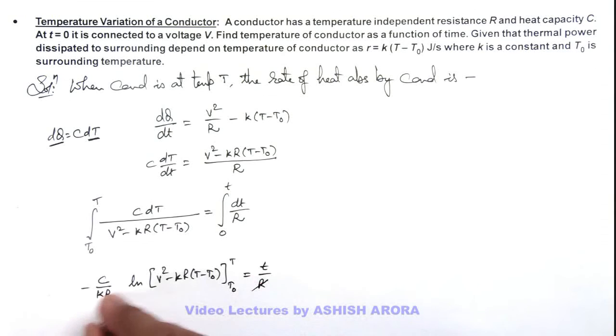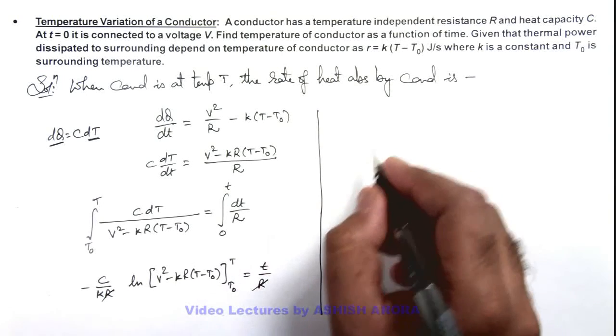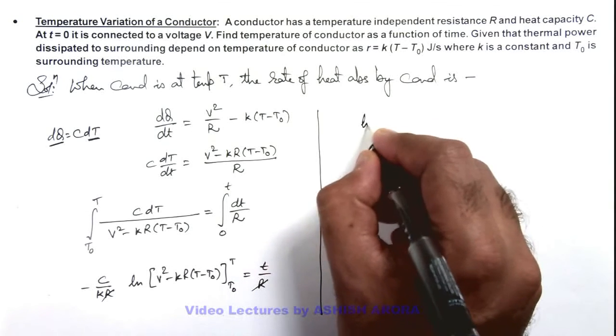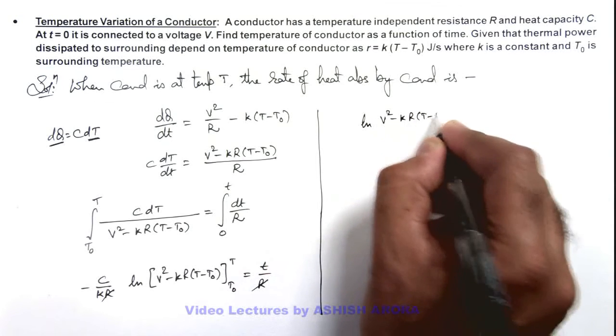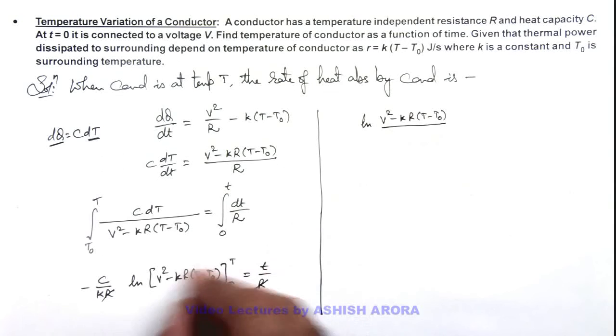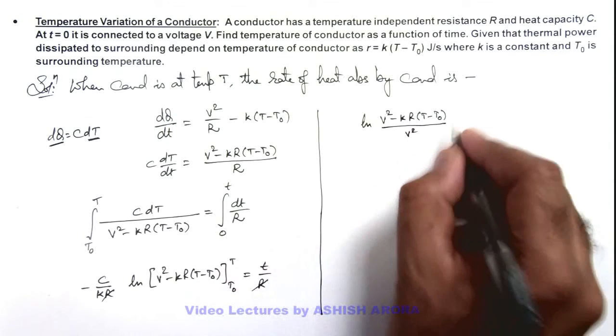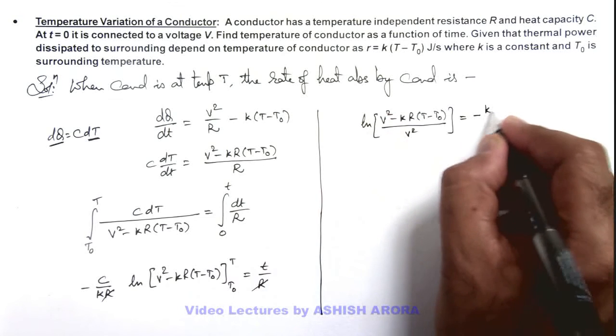Here R gets cancelled out, and further if we continue here, this will be ln((V² - kR(T - T₀))/V²) equals -kt/C, where when you put the lower limit T₀ this term will be zero so the denominator is V² only.